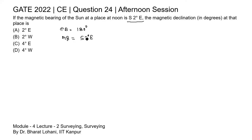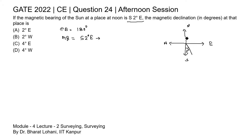Writing the magnetic bearing in WCB: if North is up, then South-East is in the lower-right quadrant. The angle is given as South 2 degree East, which is a reduced bearing. In whole circle bearing, angles are measured from North, so this angle will be 180 minus 2 = 178 degrees. So the magnetic bearing in WCB is 178 degrees.